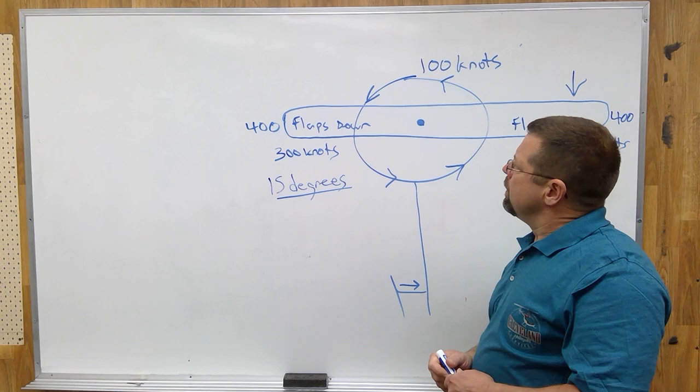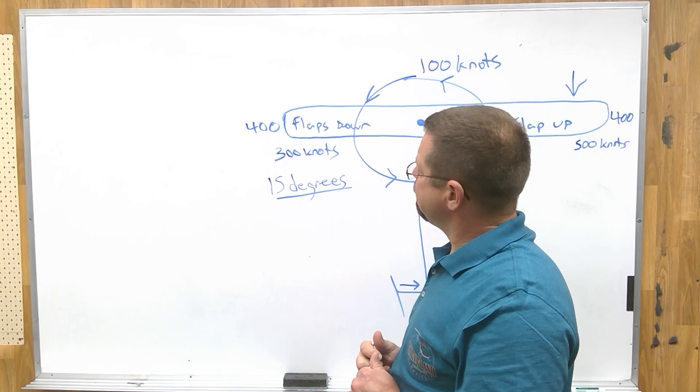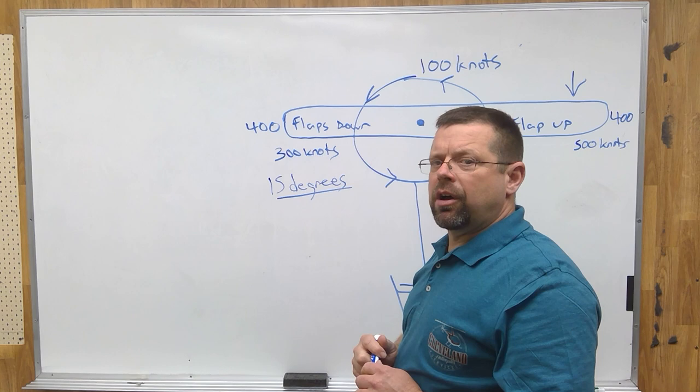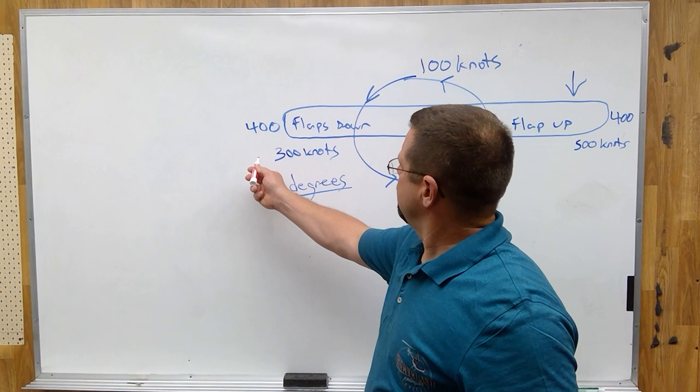It will stop equalizing lift, and then you have what's called retreating blade stall. When you lose lift here, off to the left of the helicopter, due to gyroscopic precession, you will feel that loss of lift 90 degrees later in the plane of rotation.